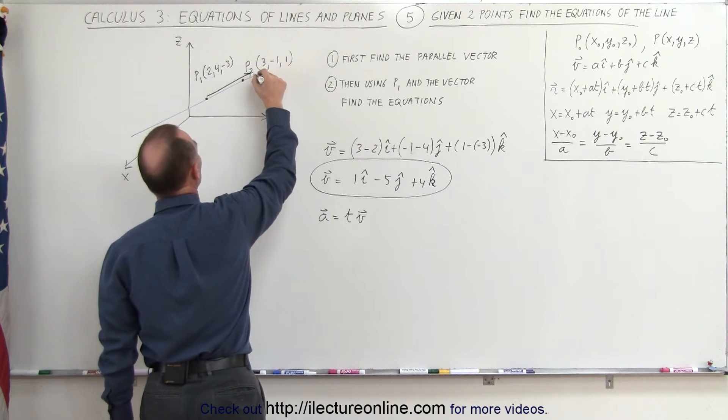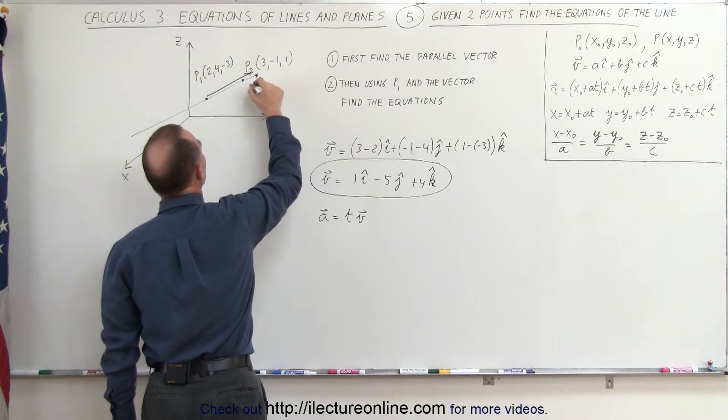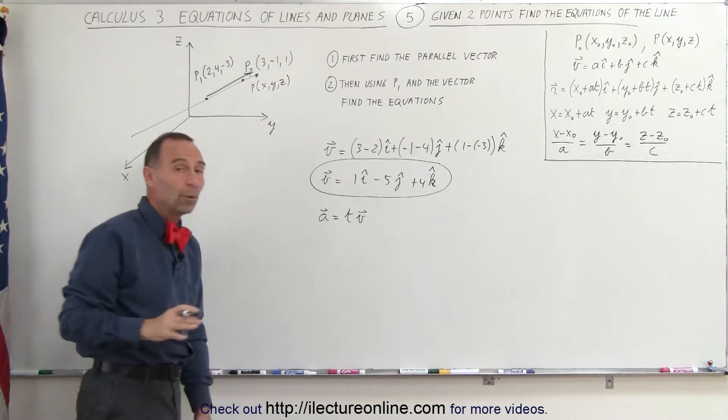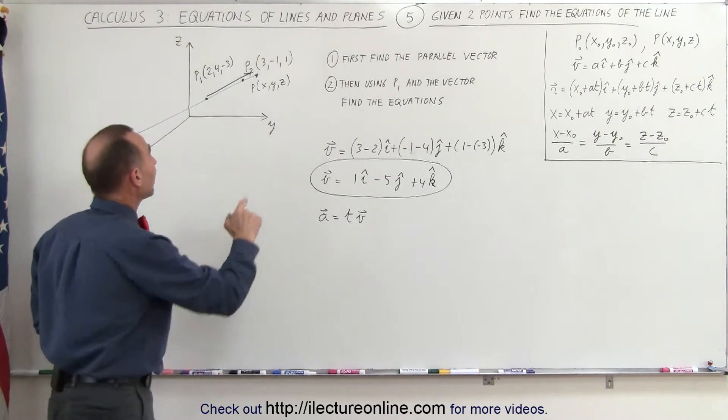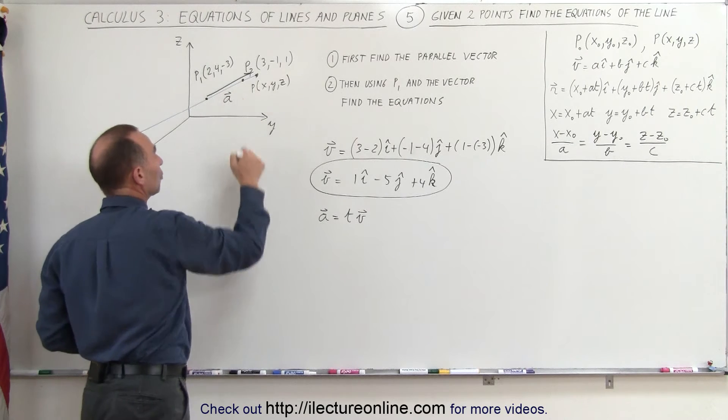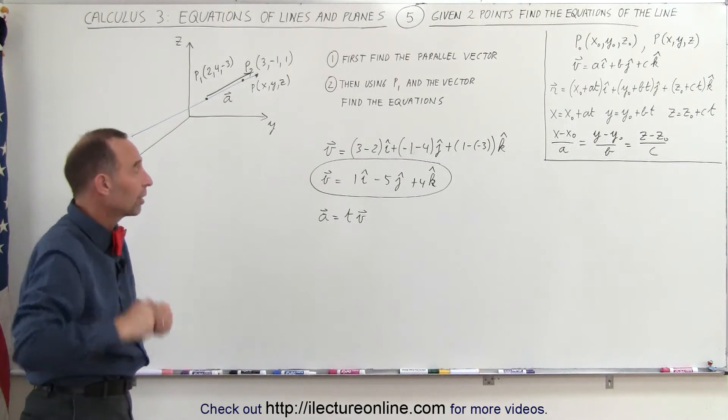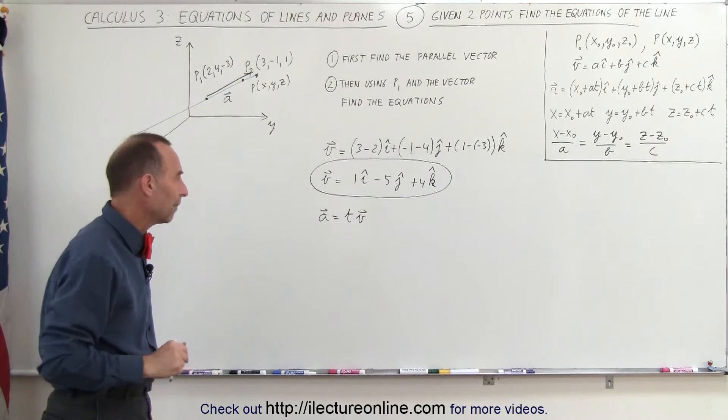Now this could be an arbitrary vector to some other point, the point x, y, and z. So now we take a third point, an arbitrary point, and create an a vector, which would be in the same direction as the v vector, but will either be longer or shorter than the v vector, and so we need the parameter t for that.